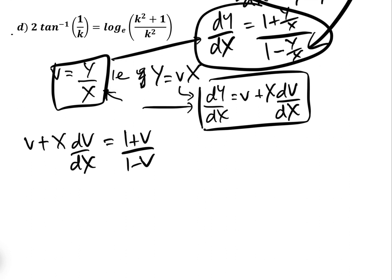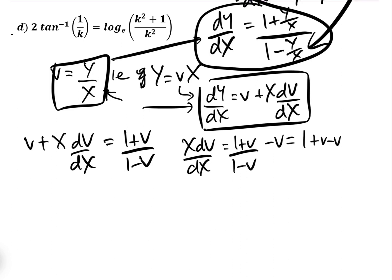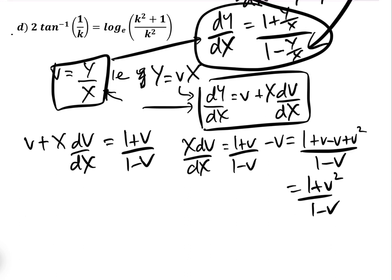Now we can separate the variables. We have X dv/dx = (1 + v)/(1 − v) − v, which equals (1 + v − v + v²) over (1 − v), which simplifies to (1 + v²) over (1 − v).